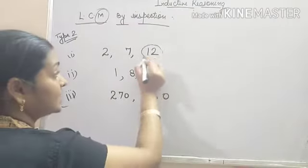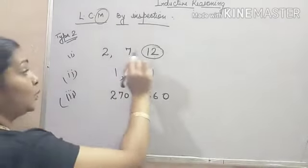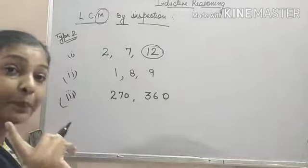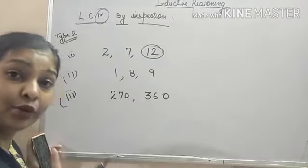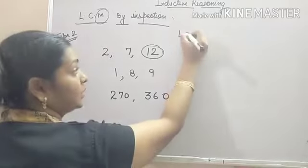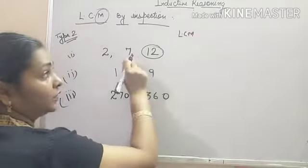Now, the biggest number is 12. Okay, now 12 is divisible by 2 but 7 is the prime number. And when you come across any prime number, the LCM will be just the product of the numbers.